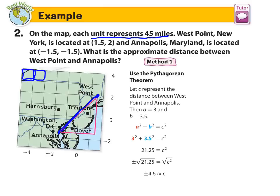There's two methods to do this. The first method is to use the Pythagorean theorem. And we can create a triangle, like you see in the picture. So we're going to let C represent the distance between West Point and Annapolis. So there's C. So we can make from -1.5, we'll go over here. We're going over 1.5, 1, 2, and another 1.5. So that's 3. That's going to be our A. And it's going up two full ones, 1, 2, looks like maybe 3. That's 1, 2, 3.5. We'll make that our B.